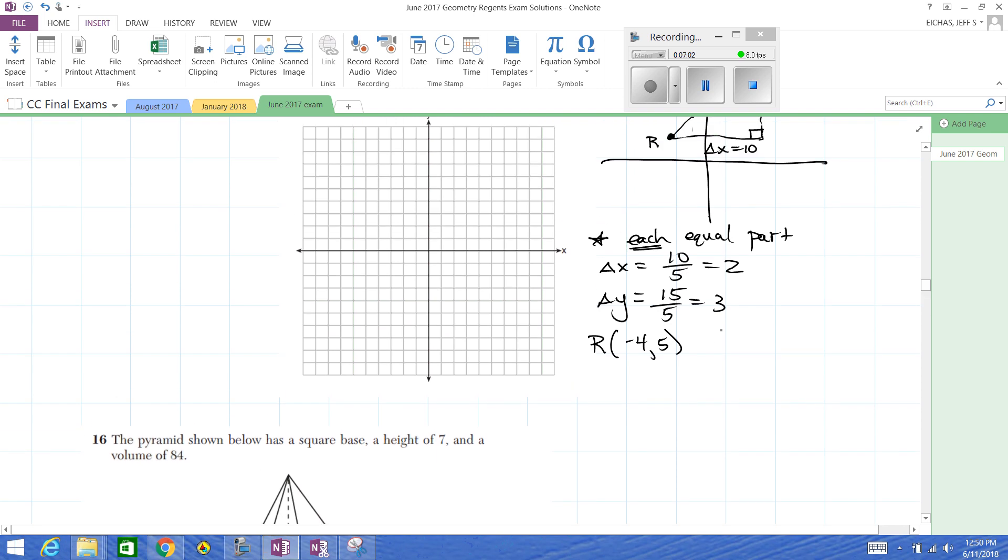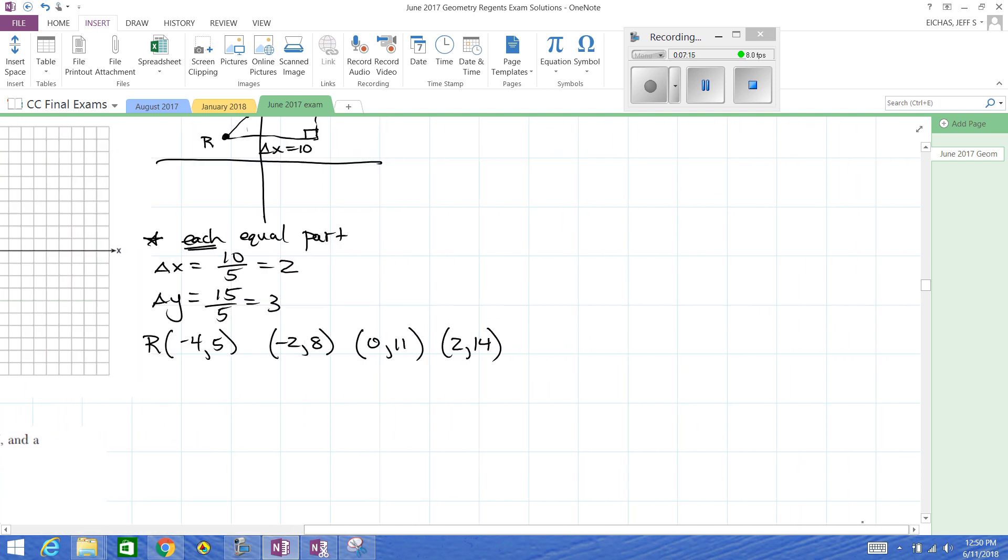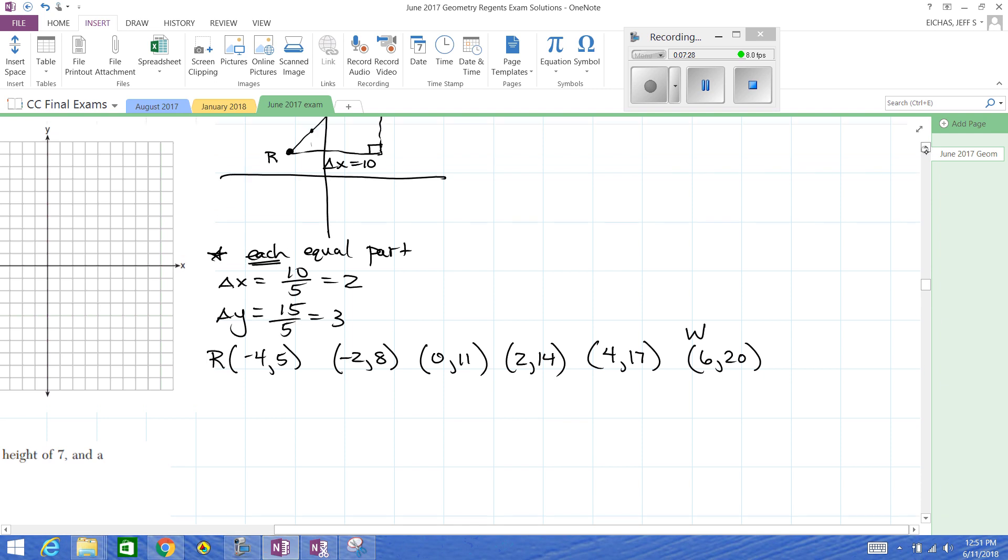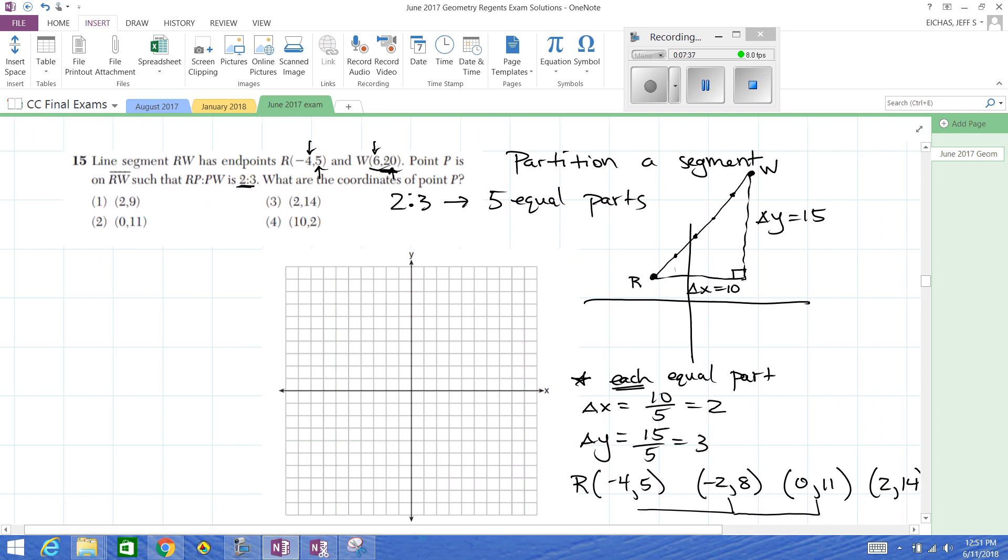The first, right two, up three. The next, another right two, up three. Keep going. Another right two, up three. Another right two, up three. And then finally at six twenty. That's W. Now we wanted to split it into, what was it again, two to three. So that's going to be one, and that's going to be your second. So zero eleven should be our answer, right here. Zero eleven. R to P. That's where P will land. So then there's three equal parts on the other side. Zero eleven.